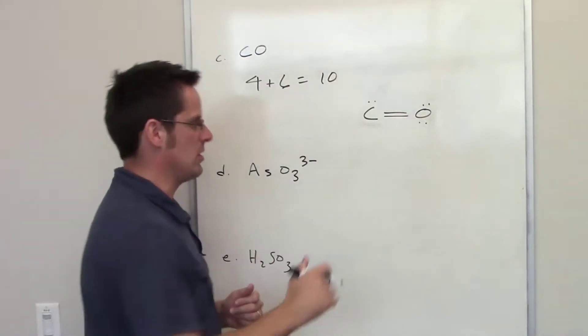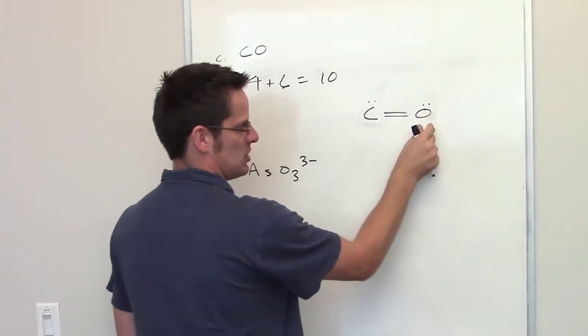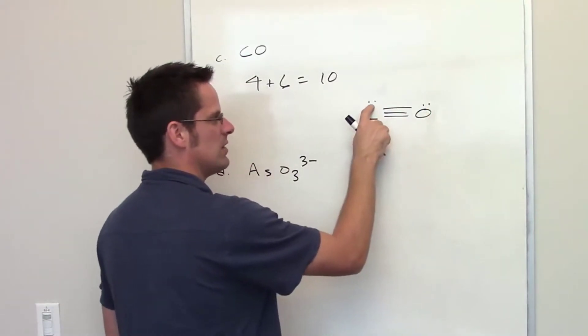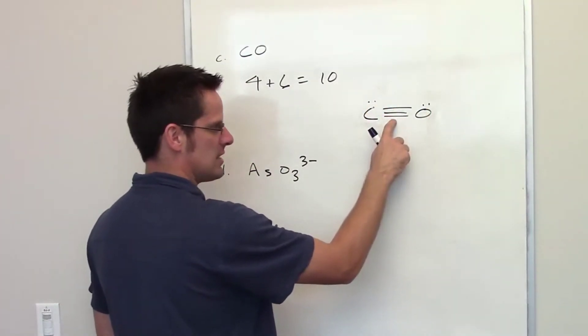So I'm going to form another extra bond, so I'm going to take two of these electrons, and I'll put it down here in the middle. Now, carbon feels like it has two, four, six, eight.